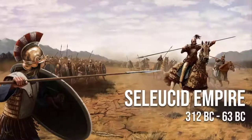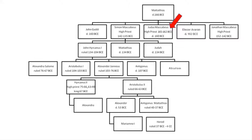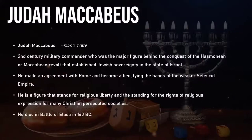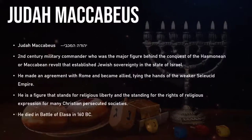The Seleucid Empire lasted 312 BC to 63 BC, when Rome took over. We're going to look at Judas Maccabeus, the leader at that period — son of Matthias, coming through the line of the priesthood. The Levites were the high priests responsible for the temple service and the Ark of the Covenant, and the Maccabeans were actually high priests, meaning we're dealing with Levites. Judas Maccabeus was a second-century military commander, the major figure behind the Hasmonean or Maccabean revolt that established Jewish sovereignty over Israel. He made an agreement with Rome and died at the Battle of Elasa in 160 BC.